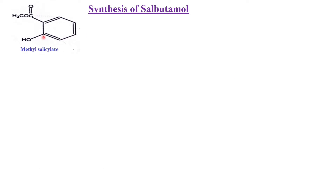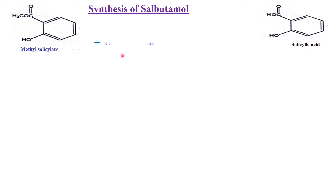Now we will see the synthesis of salbutamol. The starting material is methyl salicylate. We have already seen salicylic acid — in salicylic acid, when the H of the carboxylic acid is replaced by methyl, that is called methyl salicylate. To this we add chloroacetyl chloride. Acetyl chloride is CH3COCl; here one of the three hydrogens is replaced by Cl, giving chloroacetyl chloride (ClCH2COCl).